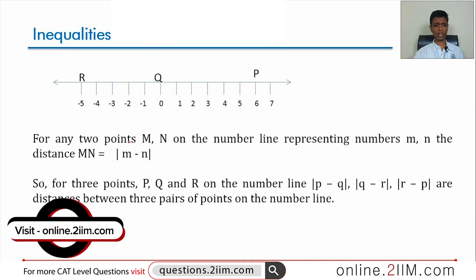Whenever we have any two points M and N on the number line, then the distance between M and N is modulus of M minus N. So, modulus of Q minus R or R minus Q would be this, Q minus P or P minus Q would be this. Modulus of R minus P or P minus R would be this.